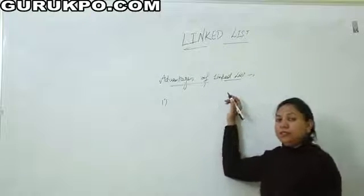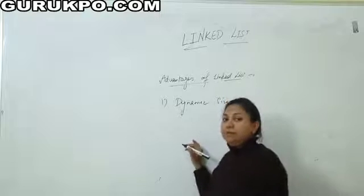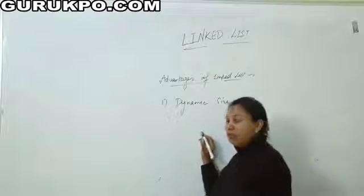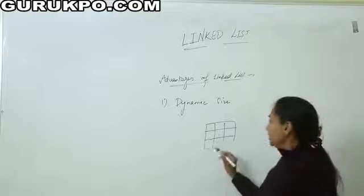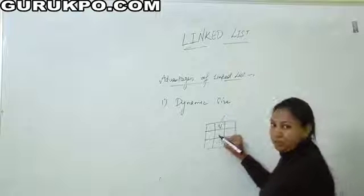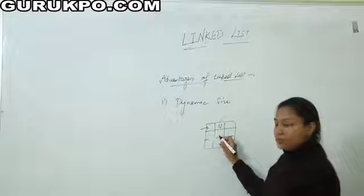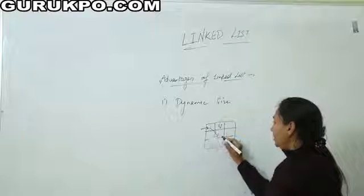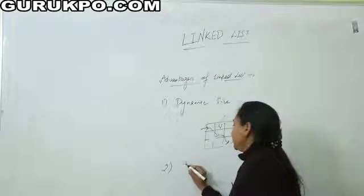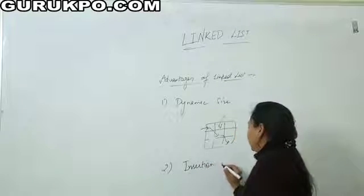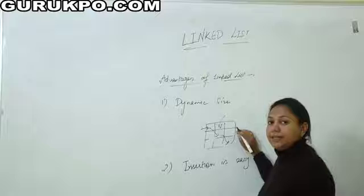The advantages of linked list: the first one is that linked list has a dynamic size — we can insert as many elements as we require directly. In memory, data is scattered in separate places; it may be possible that one cell of memory is occupied and another is empty. Through the linked list, we can store elements at different locations and attach all those elements through pointers. The next advantage is that insertion is easy in case of linked list, because we can add as many elements as we want.